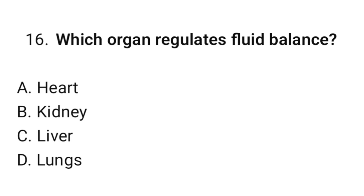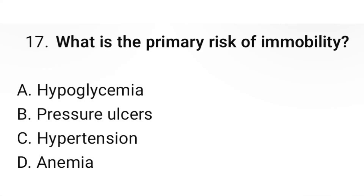Question number 16: Which organ regulates fluid balance? The correct option is B: Kidneys. Question number 17: What is the primary risk of immobility? The correct option is B: Pressure ulcers.